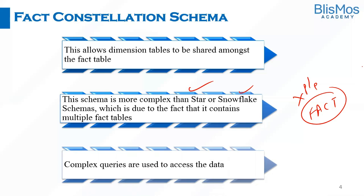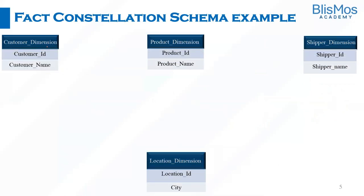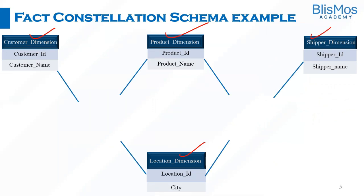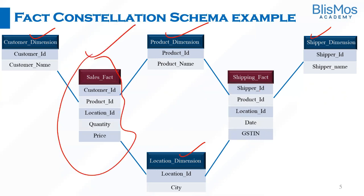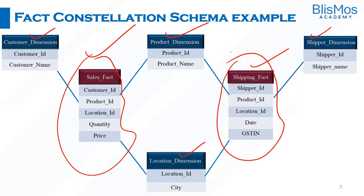Because it is complex to implement and store, when you are writing queries you have to write complex queries to access or analyze the data. Let us take an example. We have multiple dimension tables like customer dimension, product dimension, location dimension, and shipper dimension. Within these we have two fact tables: a sales fact table and a shipping fact table. Whenever a customer orders products, they may need to refer to the shipping fact table.